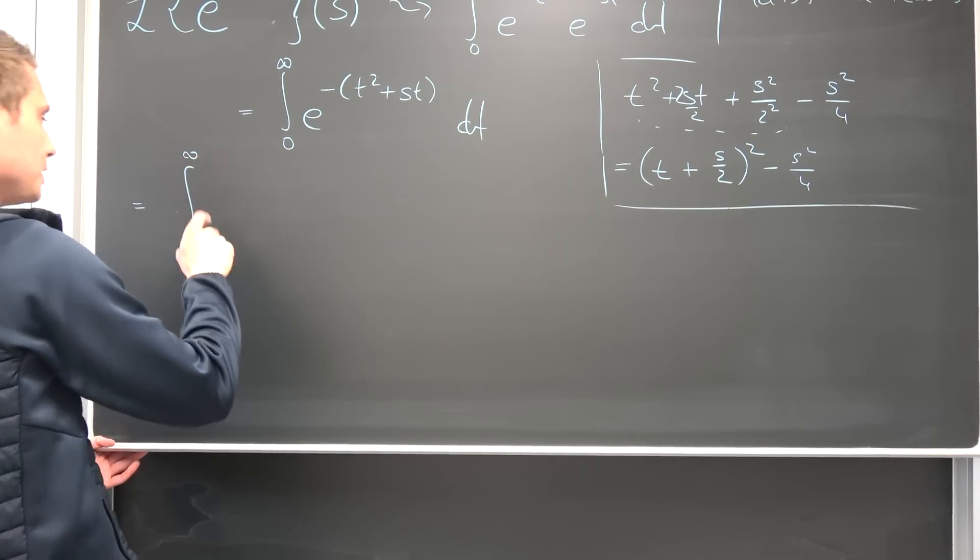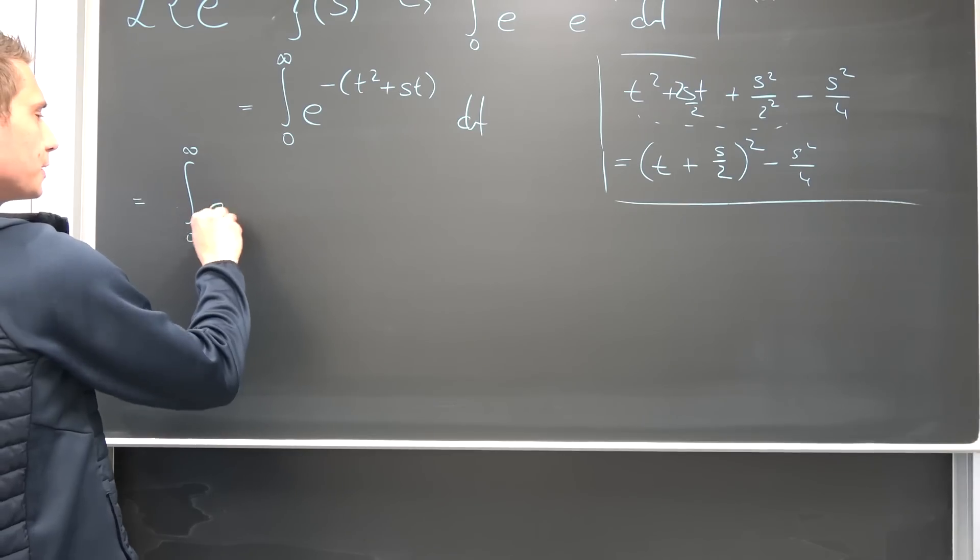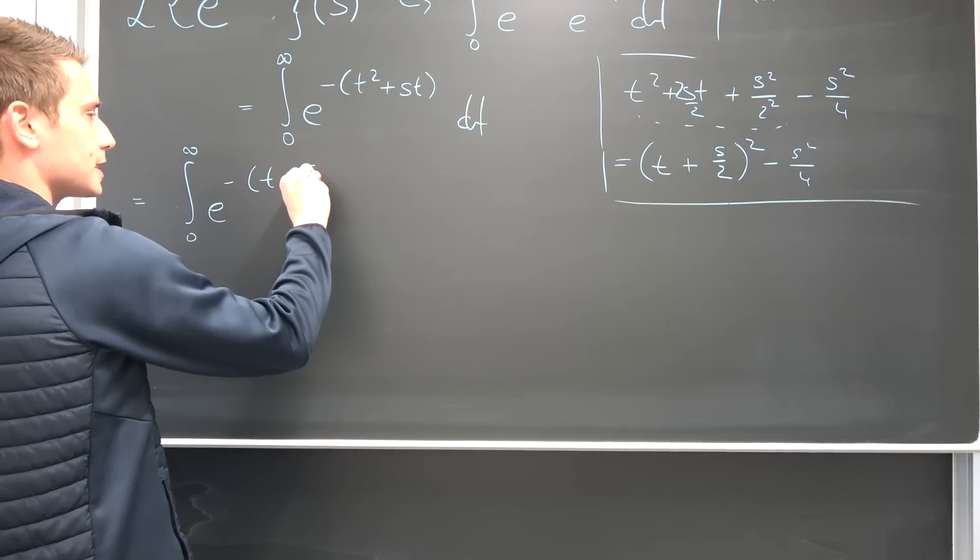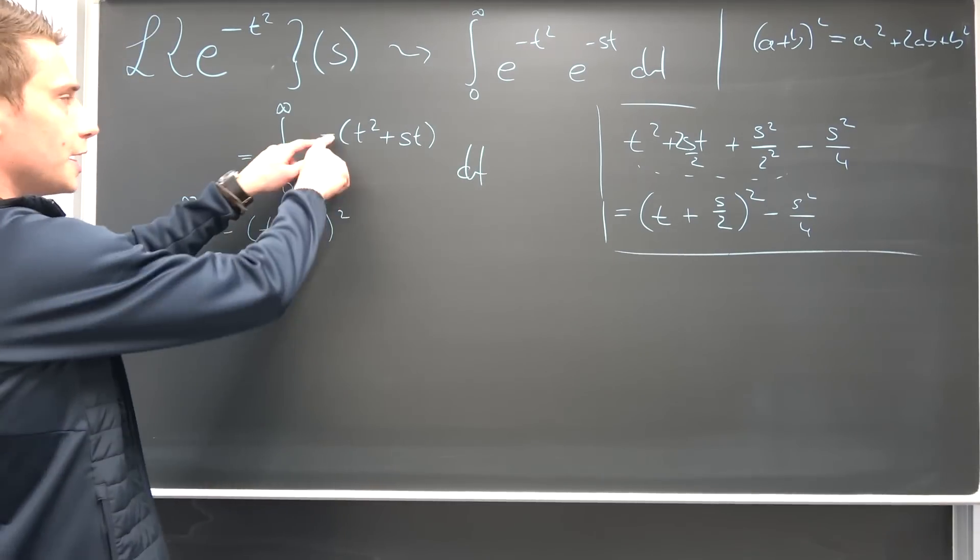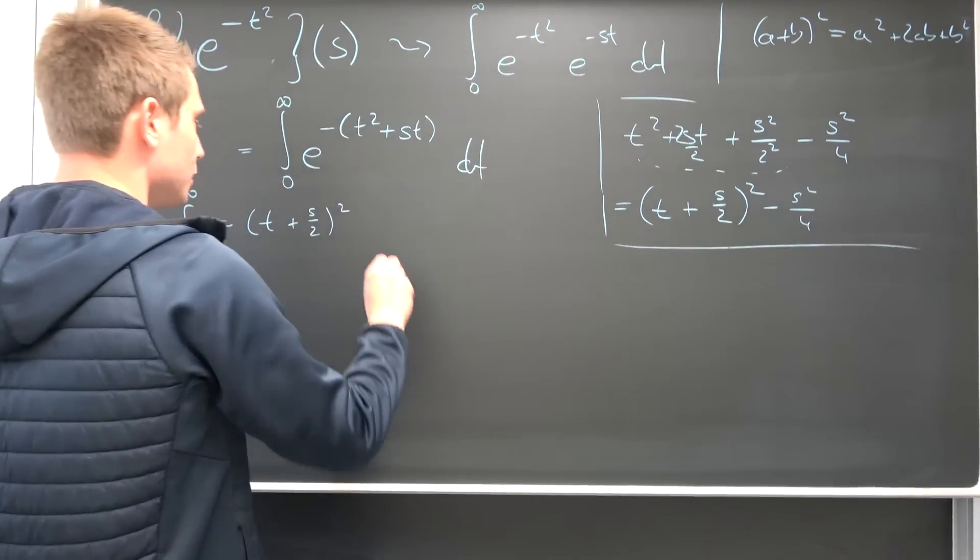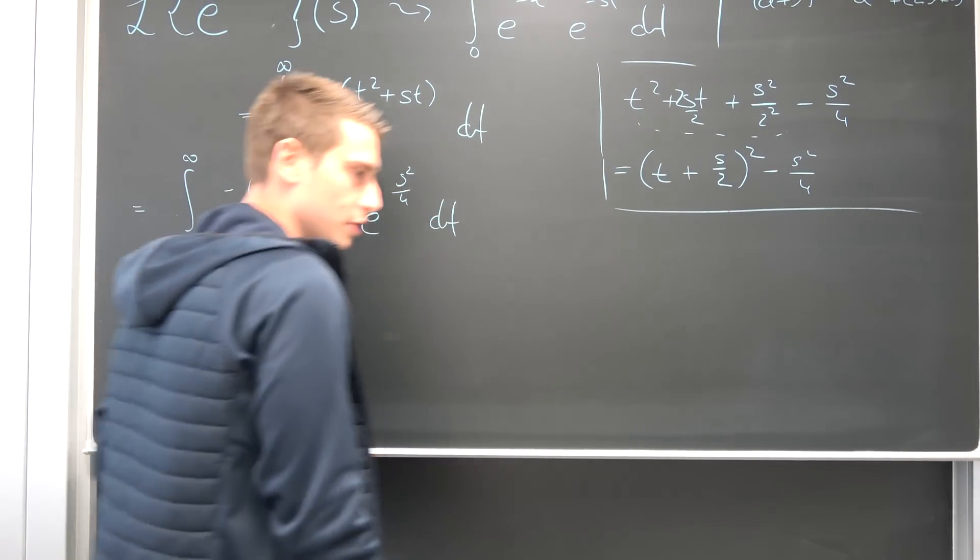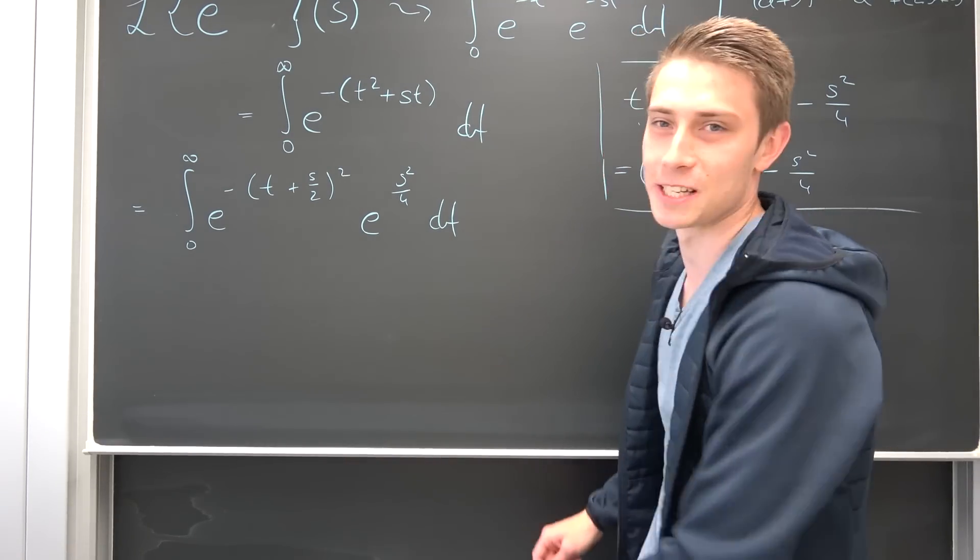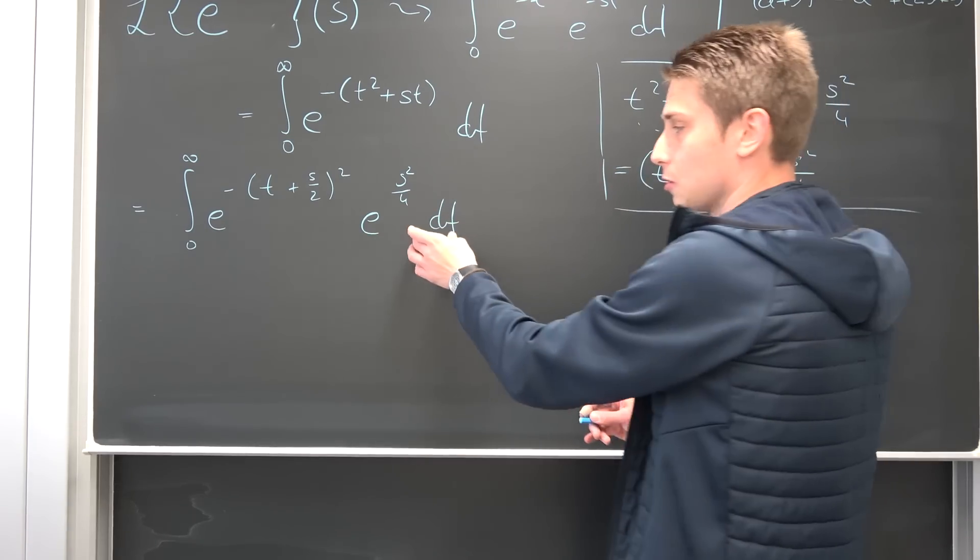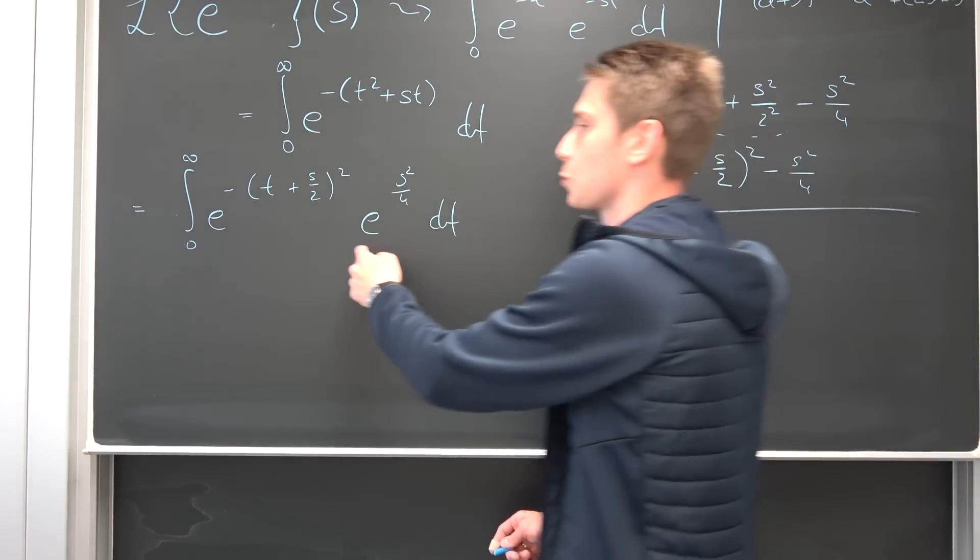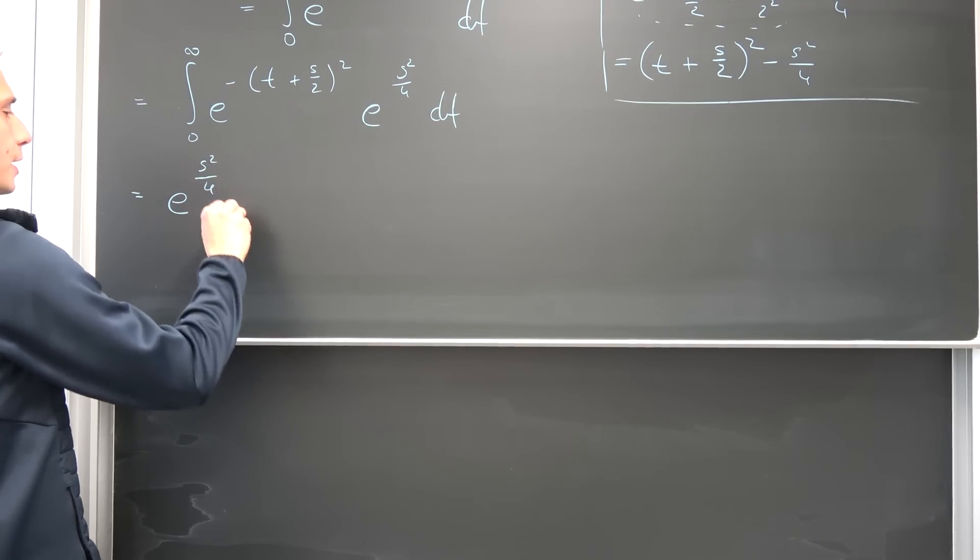So integral from 0 to infinity. That's quite a beautiful integral sign right here. So we are going to get e to the negative t plus s over 2 squared. And now using the property that we have a functional equation on the exponential function right here, negative and negative is going to become positive. So e to the positive s squared over 4 integrated with respect to t. And if you're a smart boy, a smart bruh, you can actually bring this to the outside because in terms of t, e to the s squared over 4 is just a constant. So let's bring it to the outside.